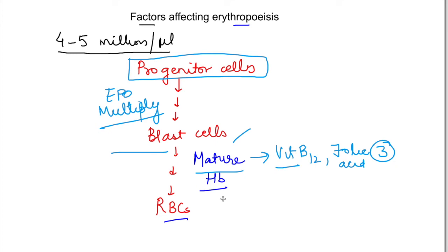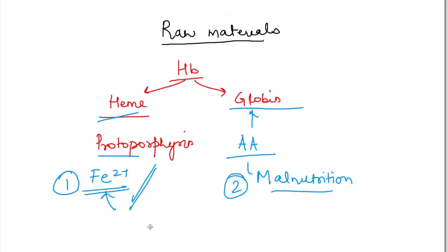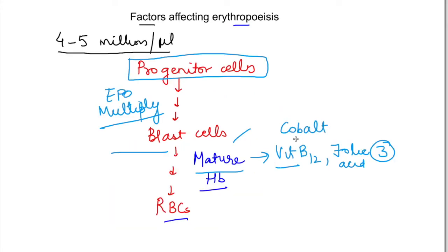So these are the major raw materials: Vitamin B12 and folic acid. Besides these, we need subsidiary raw materials which help them work. For iron absorption we need Vitamin C — if Vitamin C is reduced then iron absorption is reduced. We also need copper — copper helps transport iron and helps erythroblasts take iron inside. Then cobalt is also needed — cobalt is a mineral that is part of cyanocobalamin, which is the active component of Vitamin B12, and is used as a cofactor.